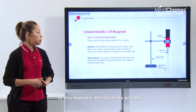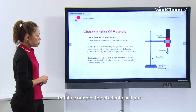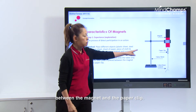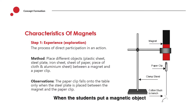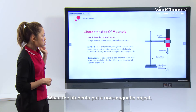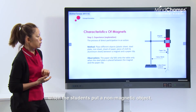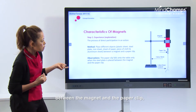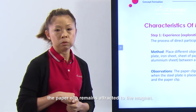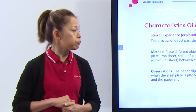In this example, the students will put magnetic and non-magnetic objects between the magnet and the paperclip. When the students put a magnetic object between the magnet and the paperclip, the paperclip will fall onto the bench. And when the students put a non-magnetic object between the magnet and the paperclip, the paperclip remains attracted to the magnet.